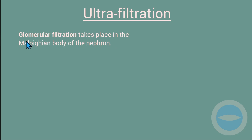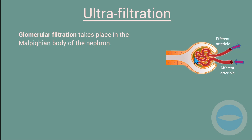First, let us look at ultrafiltration, also called glomerular filtration, because it takes place in the glomerulus of the nephron. Glomerular filtration takes place in the Malpighian body of the nephron. This is a simple structure of a Malpighian body — the outer part is the Bowman's capsule, and the capillary inside is called the glomerulus. The glomerulus is connected by two vessels: the afferent arteriole and the efferent arteriole.